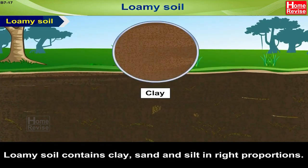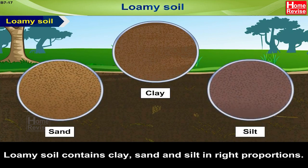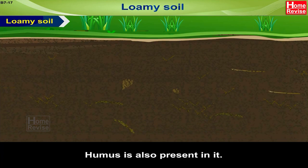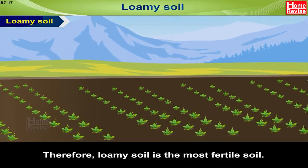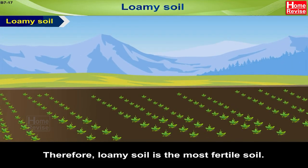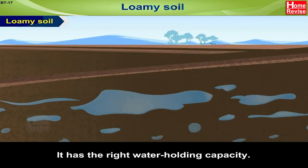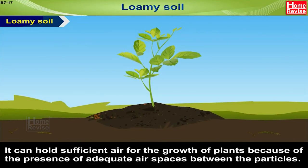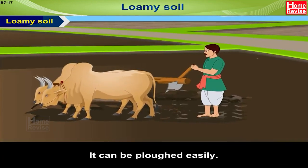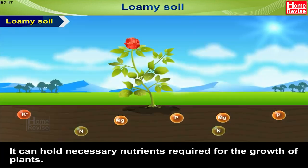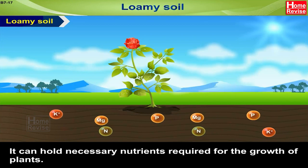Loamy Soil: Loamy soil contains clay, sand, and silt in right proportions. Humus is also present in it. Therefore, loamy soil is the most fertile soil. The characteristics of loamy soil are: it has the right water-holding capacity, it can hold sufficient air for the growth of plants because of adequate air spaces between the particles, it can be ploughed easily, and it can hold necessary nutrients required for the growth of plants.